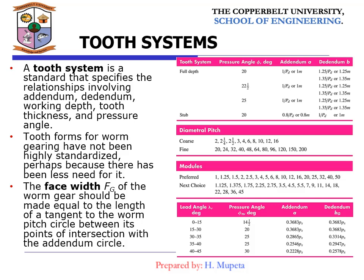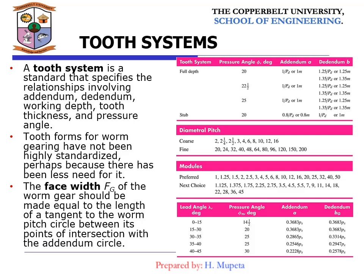The worm can easily turn the worm gear, but the gear may not easily turn the worm. When the worm gear cannot drive the worm, the gear set is called self-locking; when the worm gear can drive the worm, this is called overhauling. The tooth system standard specifies the relationships involving the addendum, dedendum, working depth, tooth thickness, and pressure angle. The face width of the worm gear should be made equal to the length of a tangent to the worm pitch circle between its points of intersection with the addendum circle. Standard tooth properties are given in the table on the right-hand side.